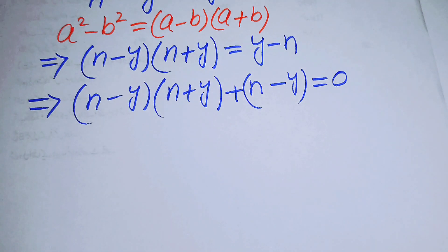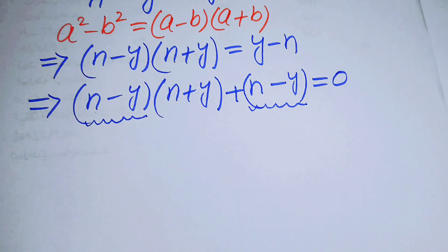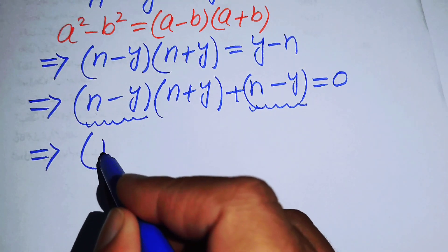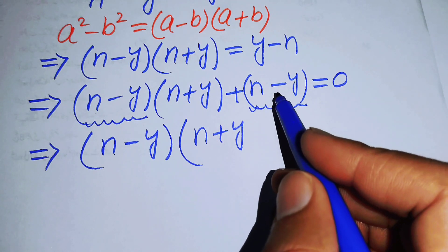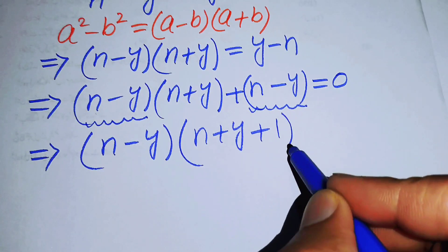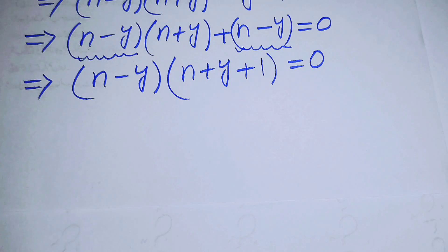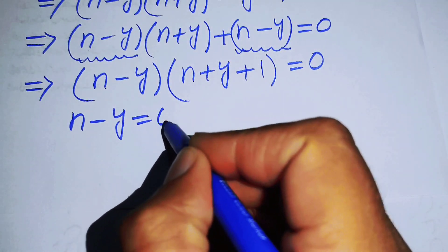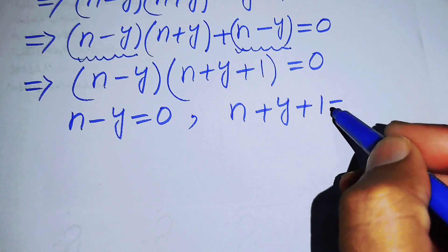Both terms contain the factor (n - y), so we factor it out to get (n - y)(n + y + 1) = 0. This gives us two cases: Case 1 is n - y = 0, and Case 2 is n + y + 1 = 0.